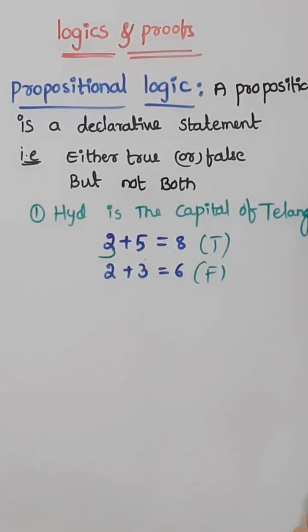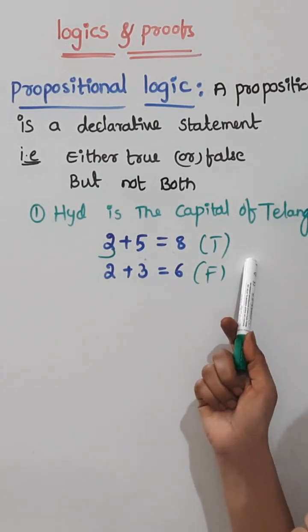For example, 3 plus 5 is 8. This is a declarative sentence with true value.